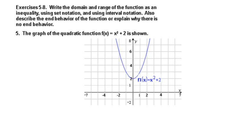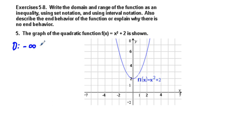Next, we're going to go to number five. Write the domain and range of the function as an inequality in set notation, and also describe the end behavior or explain why there is no end behavior. Here we have a quadratic function — the graph of it shown. For domain, I'm just going to put D colon. The domain of a quadratic function is all real numbers. In inequality notation that looks like negative infinity less than x less than positive infinity.